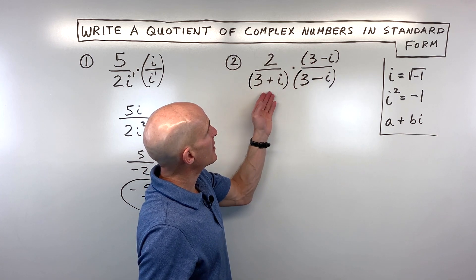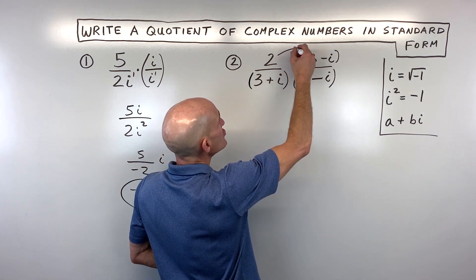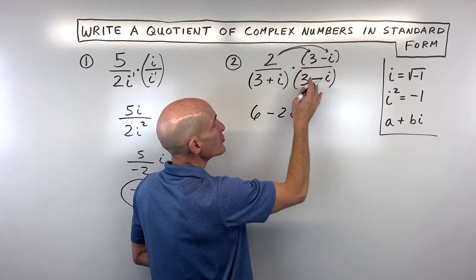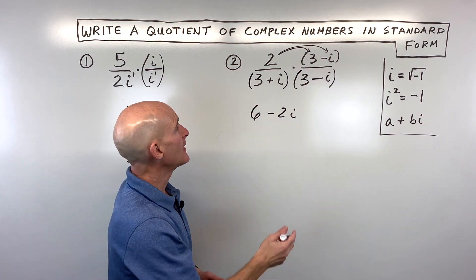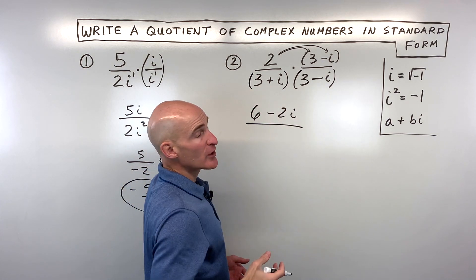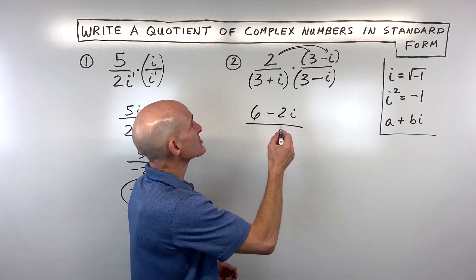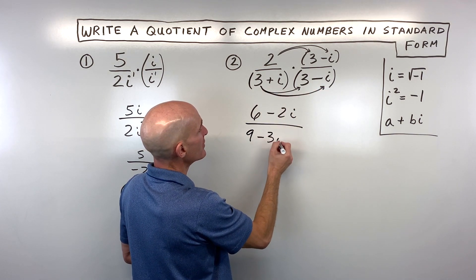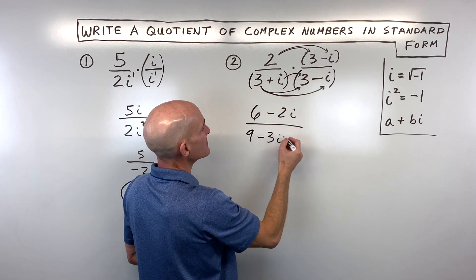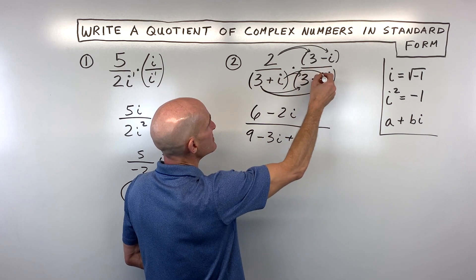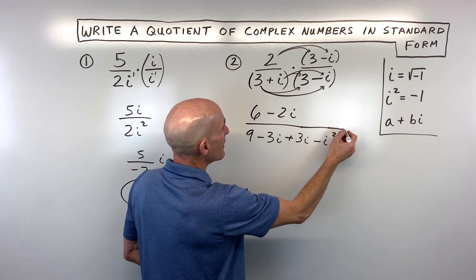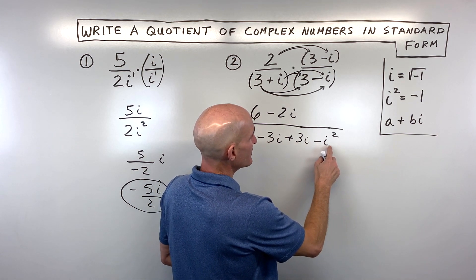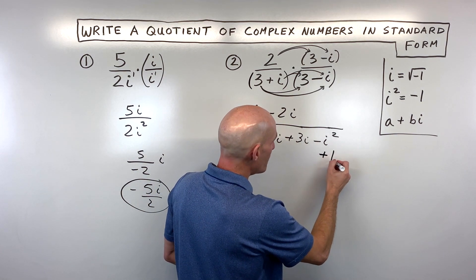Now we have to multiply the numerators together and the denominators together. We're going to distribute this 2: 2 times 3 is 6, and 2 times negative i is negative 2i. Remember, you can think of i kind of like a variable like x or y. For the denominator, we've got a binomial times a binomial — we can FOIL, or distribute twice. So: 3 times 3 is 9, 3 times negative i is negative 3i, then i times 3 is positive 3i, and i times negative i is negative i squared.